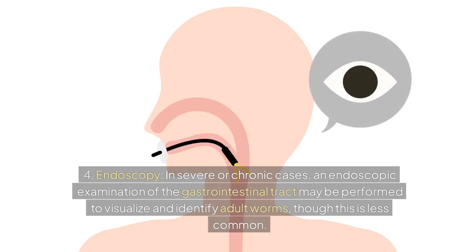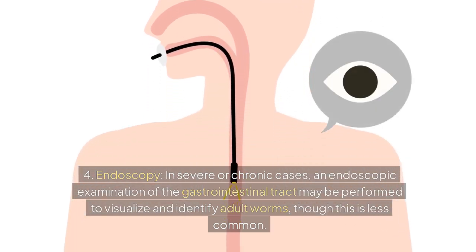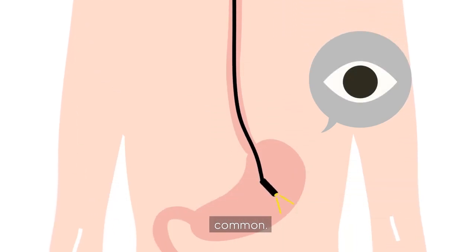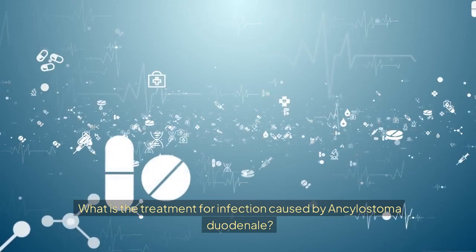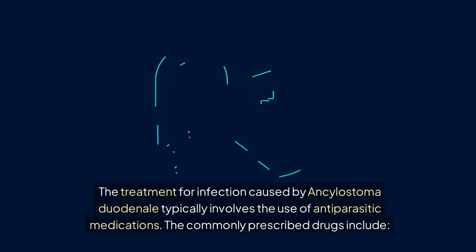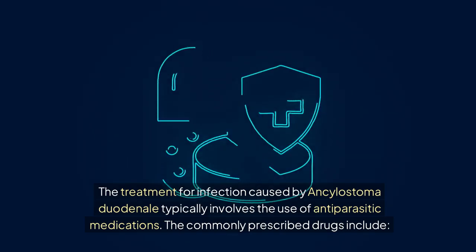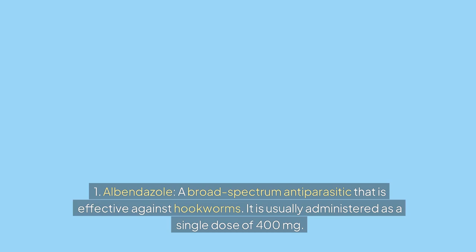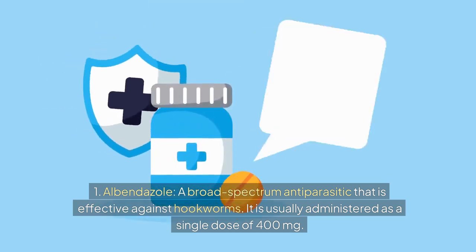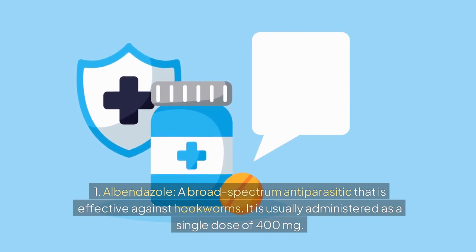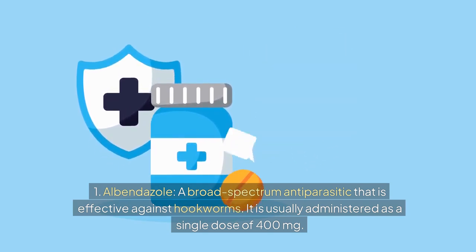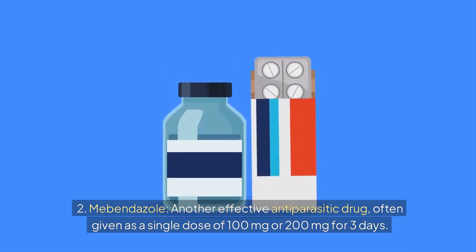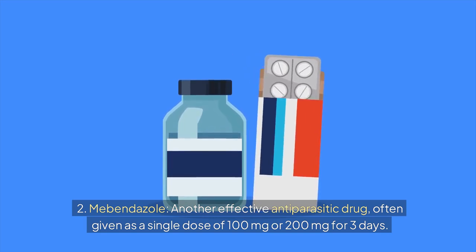Method 4 — Endoscopy: In severe or chronic cases, an endoscopic examination of the gastrointestinal tract may be performed to visualize and identify adult worms, though this is less common. Treatment for Ancylostoma duodenale infection typically involves antiparasitic medications. Commonly prescribed drugs include: Albendazole, a broad-spectrum antiparasitic effective against hookworms, usually administered as a single dose of 400 mg; and Mebendazole, another effective antiparasitic, often given as a single dose of 100 mg or 200 mg for 3 days.